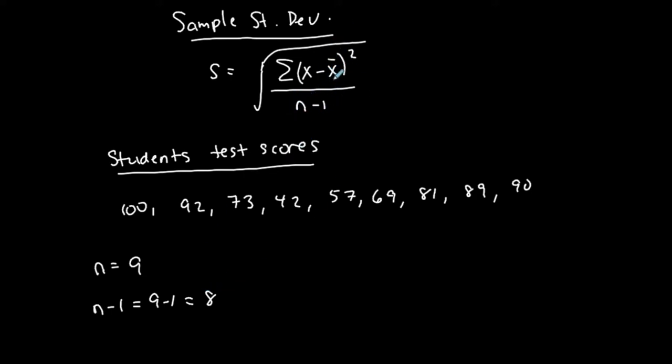The next thing we need to do is find x bar, which is the sample mean. So to find the sample mean, we're going to add up all the values. 100 plus 92 plus 73, all the way to the last value 90 and divide by the number of values that we have, which in this case again is 9.